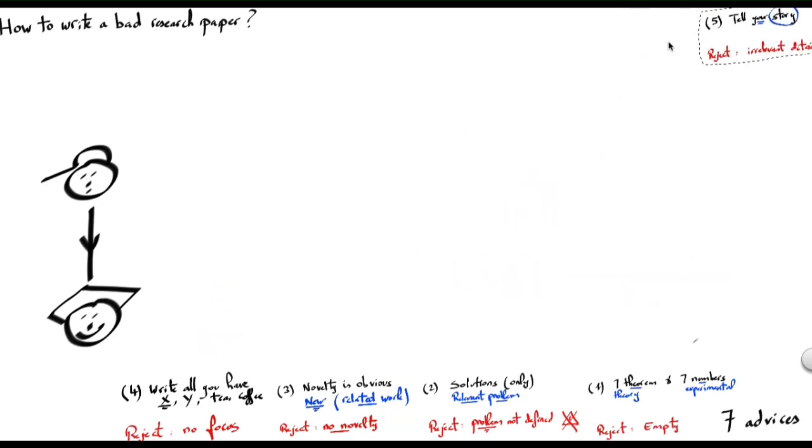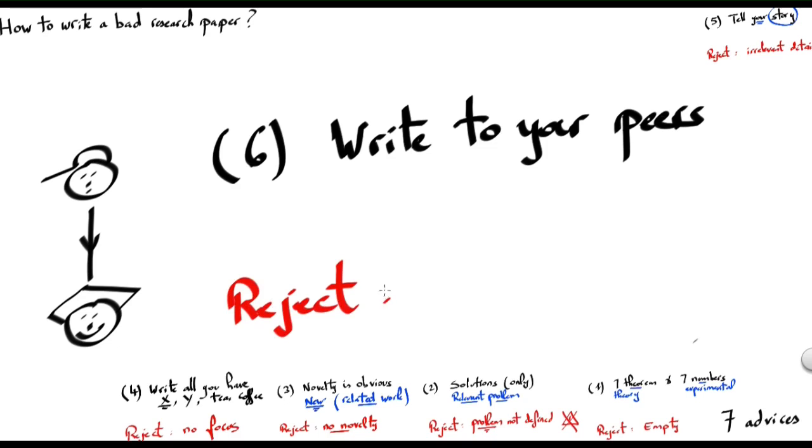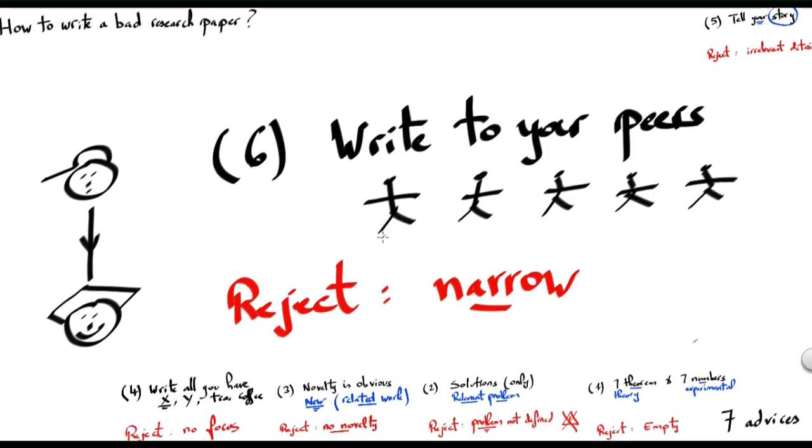Another advice: write to your peers. When you write a paper, you typically write to people like you. In many cases, reviewers say the paper should be rejected because it's narrow. In program committees or editorial boards, there are typically many people who will review your papers. The probability that all of them know exactly your area is very small.